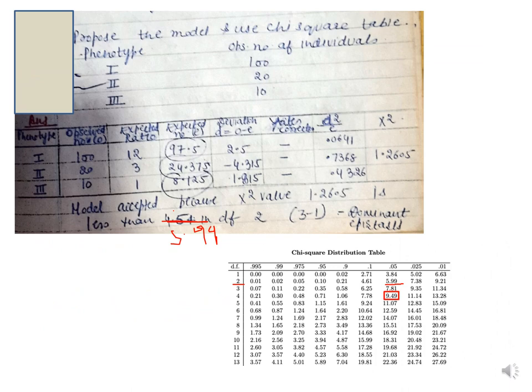Here is another problem with 3 phenotypes — again degrees of freedom is 2, so Yates correction is not applied. The calculated chi-square value is 1.2605. For degrees of freedom 2, the standard value below p=0.05 is 5.99. Since our calculated value of 1.2605 is less than 5.99, the proposed model is accepted.